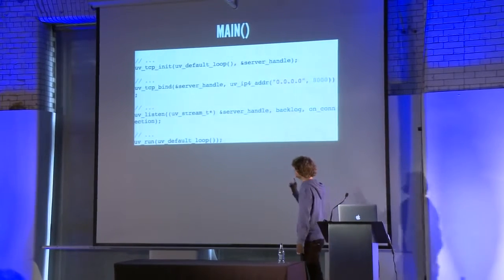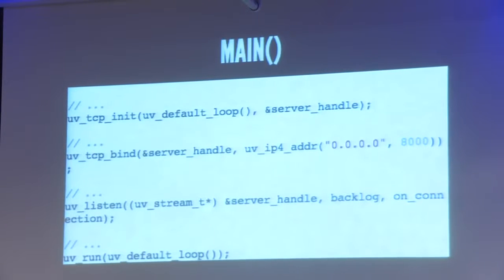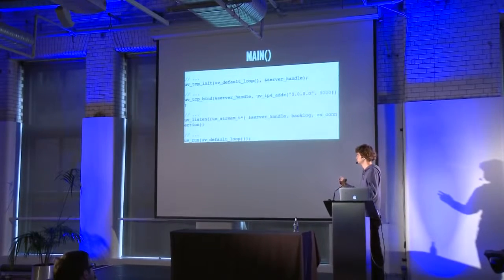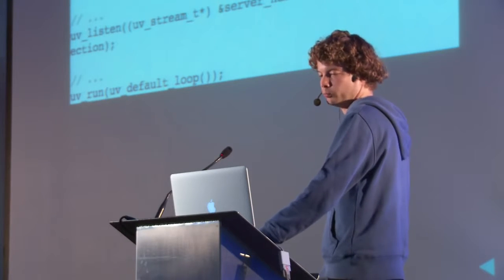The actual program — this is the main routine, the entry into our program. I have removed the non-essential parts. What happens here is that we create a TCP server handle, bind it to a public interface, then tell LibUV to make it a listen socket. Whenever a connection comes in, it should call our onConnection callback. And last but not least, we start the actual event loop with uv_run. Once you call uv_run, your program does not return until you've closed all active handles, so for most programs uv_run is the final destination — from there on, it's all event-driven.